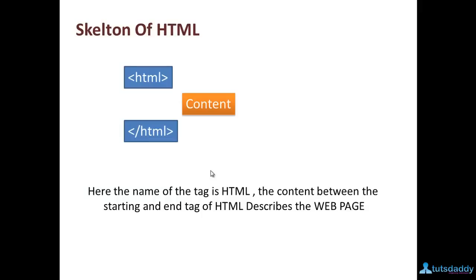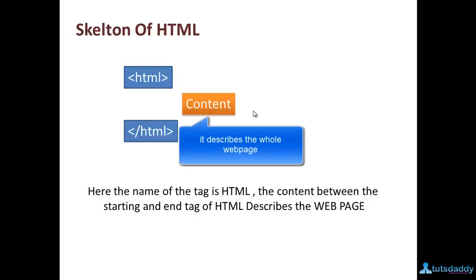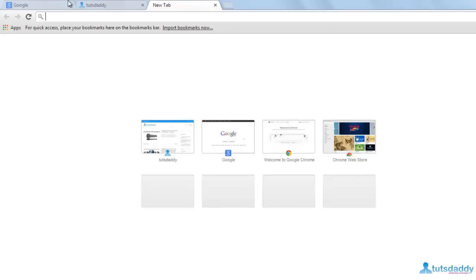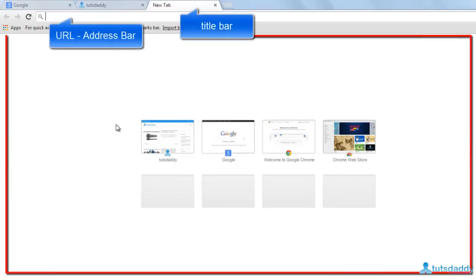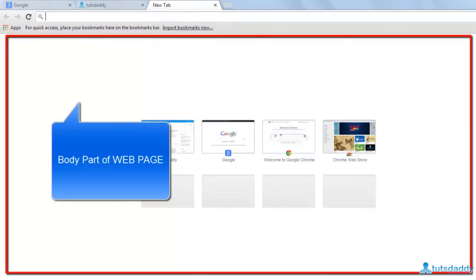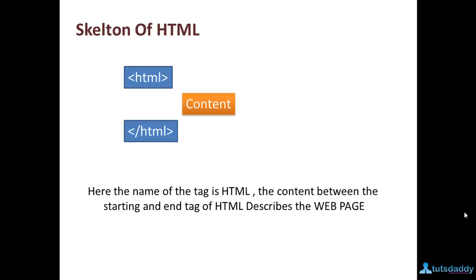The definition of an HTML element is everything between the start tag and end tag, including the tags. Next, we discuss the skeleton of HTML. The root tag name is HTML, with a start tag and end tag. The content between the start and end of the HTML tag describes the web page. Each HTML element is used to represent a visual element of a website, so we need to know what HTML elements are available.